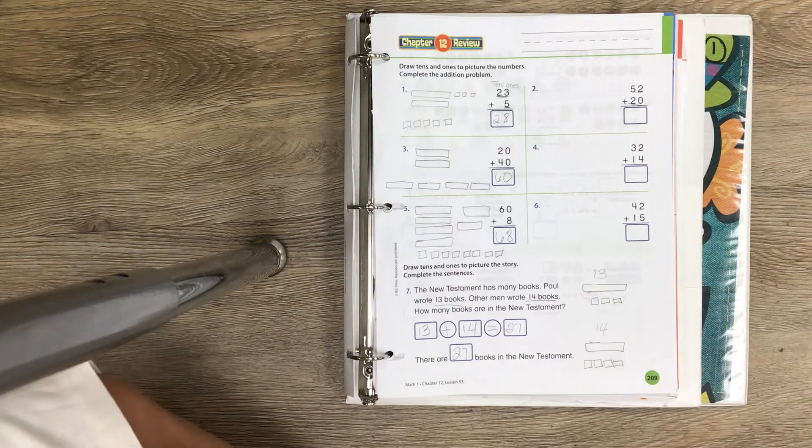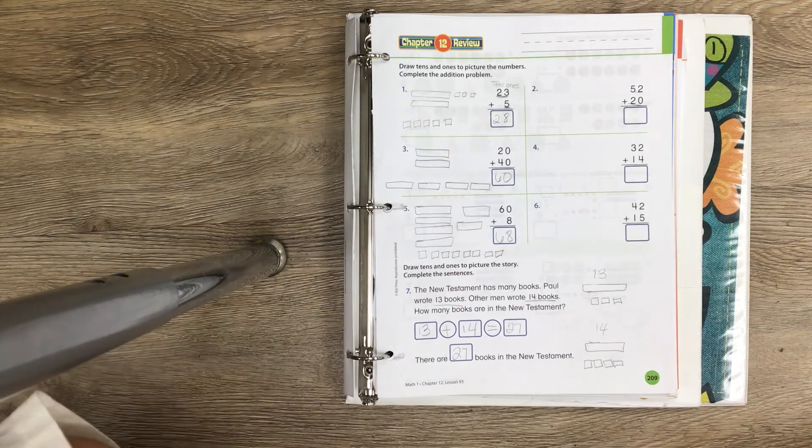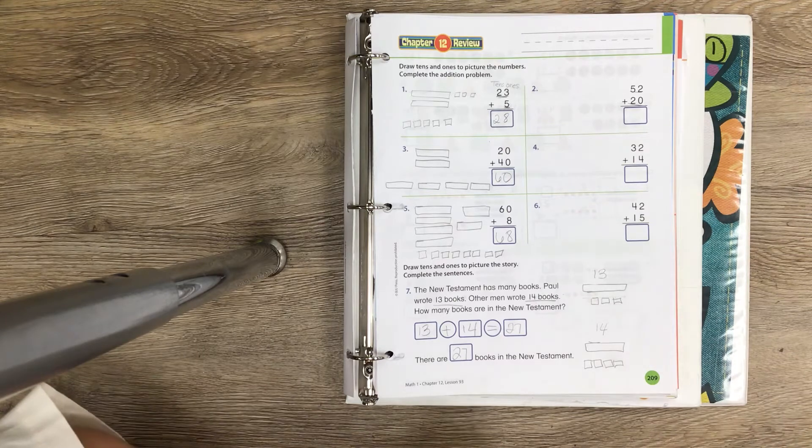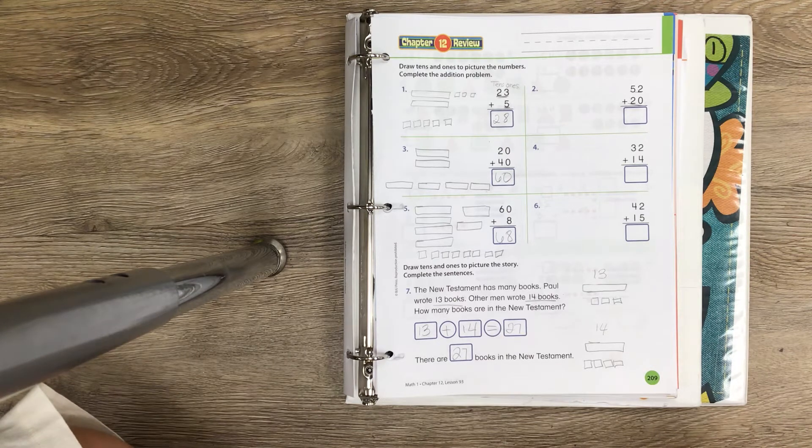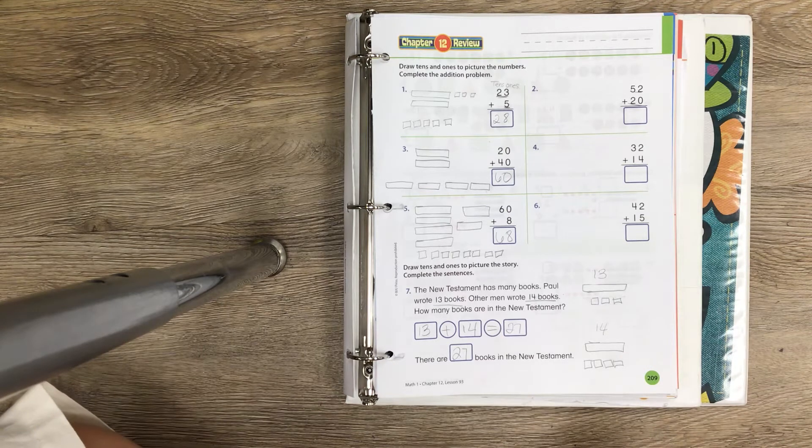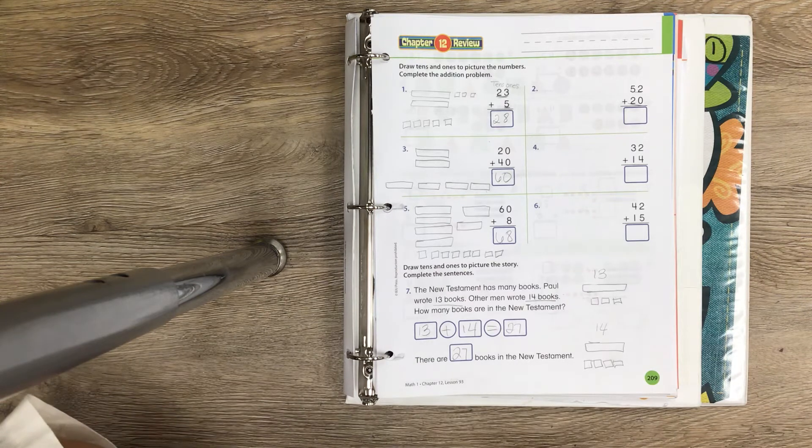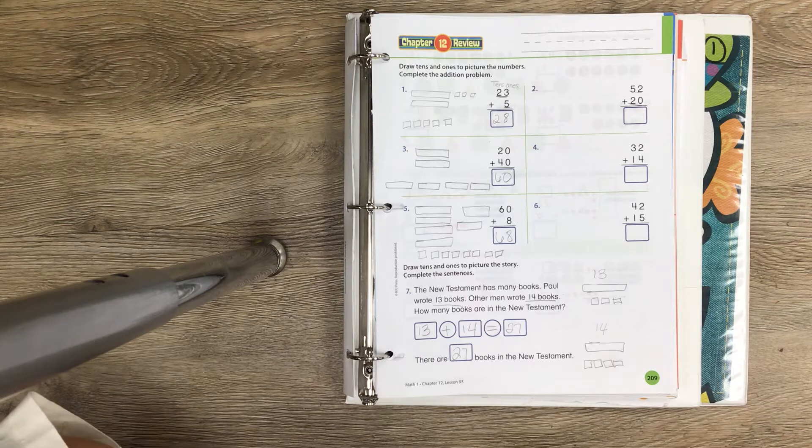Hey guys, welcome back to math. Today we're doing a Chapter 12 review. We've been learning about adding using our tens in one place, adding double digits. I know it's been kind of a lot this chapter, but hopefully you guys have been able to follow along with me. We are going to review this week before I give you any kind of test, just to make sure you guys really understand what we're doing.